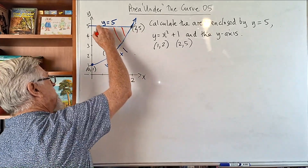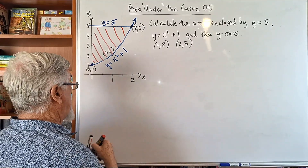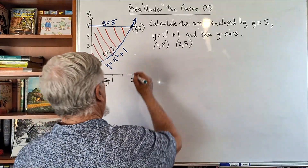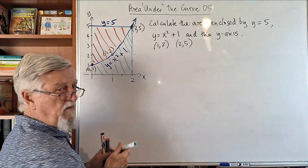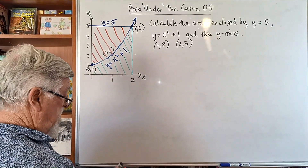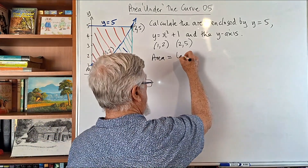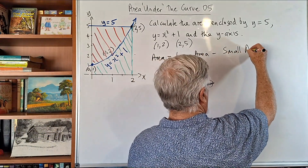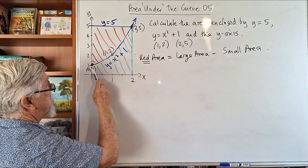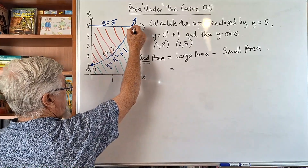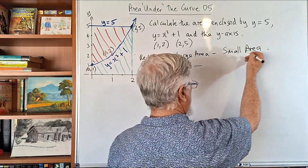The only thing we know how to do at the moment is calculate the area coming down this way — the green area between the curve and the x-axis. We don't yet know how to directly calculate the red area. So I'm going to look at this as: the red area equals the large area minus the small area. The large area is the rectangle — 5 times 2 equals 10. Then we subtract the green area.